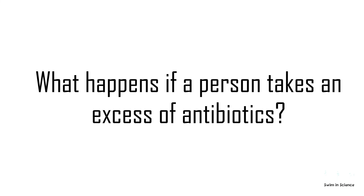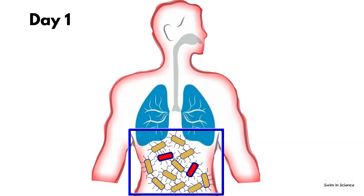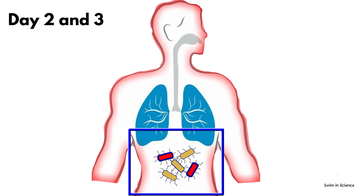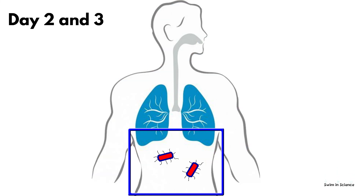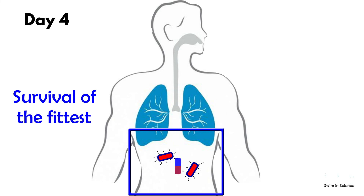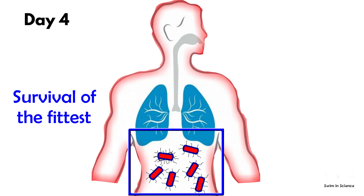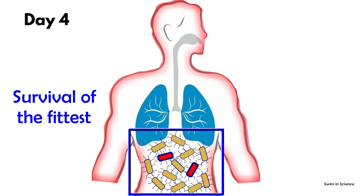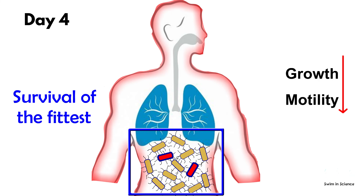What happens if a person takes an excess of antibiotics? On day 1, the number of pathogens starts reducing. On days 2 and 3, pathogens are killed gradually but one or two resistant bacteria may survive — the concept of survival of the fittest comes into picture. Continuing antibiotics for a 4th day facilitates the growth of survived resistant strains. Generally, these resistant bacteria have less chance to survive in the presence of susceptible strains because the resistance caused by mutation reduces physiological activities such as growth and motility. This is called fitness cost.